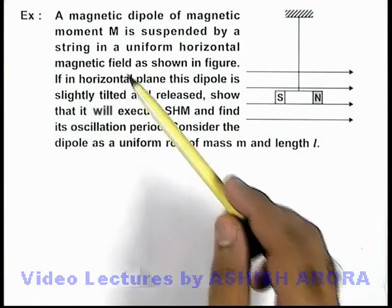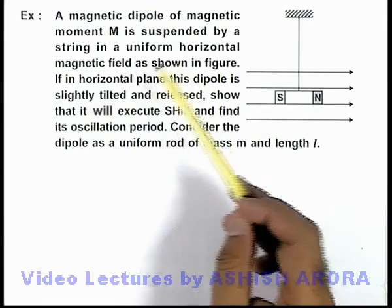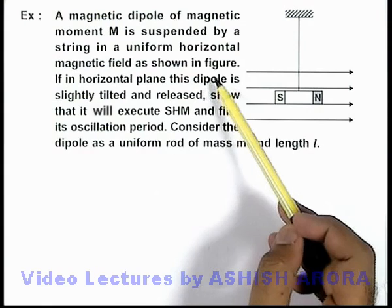In this example, we are given that a magnetic dipole of magnetic moment M is suspended by a string in a uniform horizontal magnetic field as shown in the figure.